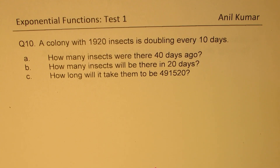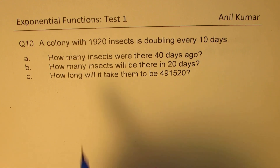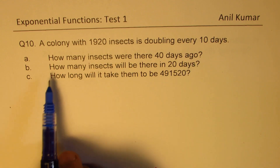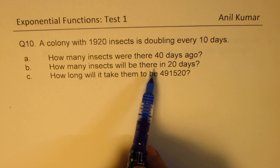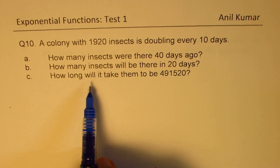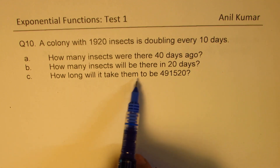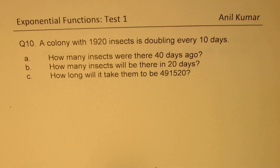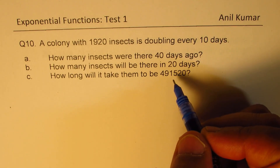Question number 10. A colony with 1920 insects is doubling every 10 days. We have three questions related to this information: how many insects were there 40 days ago, how many insects will there be in 20 days, and how long will it take them to reach 491,520? First, we'll write down the equation and then look into the solution of parts A, B, and C.